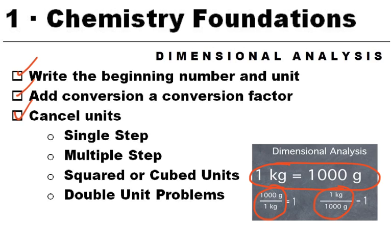We're going to have a couple of different kinds of problems. We have ones that only require a single step, others that are multiple step, and that's not a problem. Then we have squared or cubed units, and that's when we're going to use the same conversion factor twice or three times.